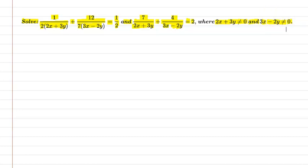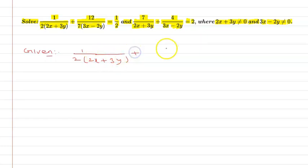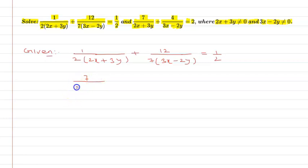So let us start. We have two equations: the first is 1 upon 2 into (2x + 3y) plus 12 upon 7 into (3x − 2y) equal to 1 upon 2, and the second is 7 upon (2x + 3y) plus 4 upon (3x − 2y) equal to 2.